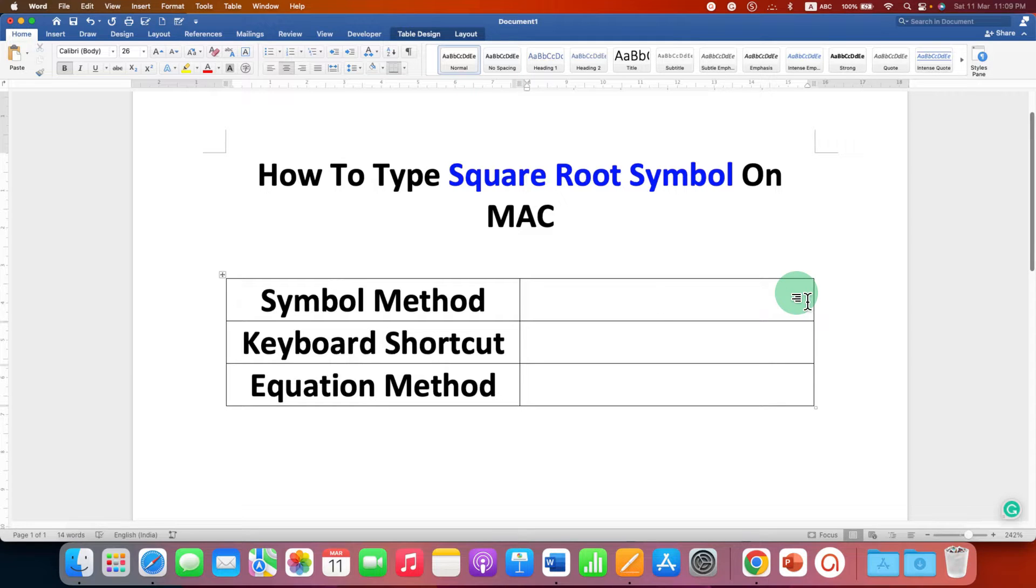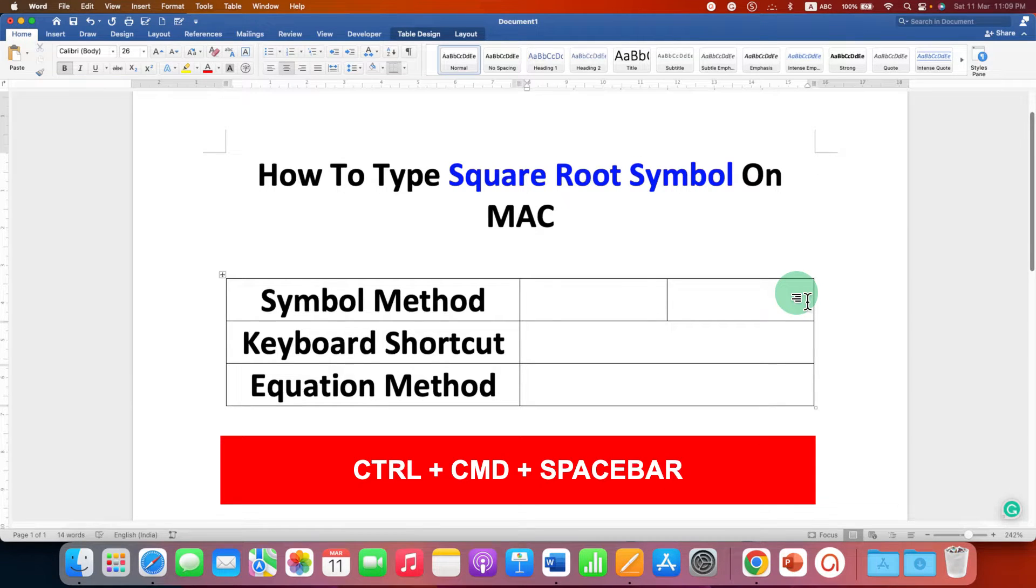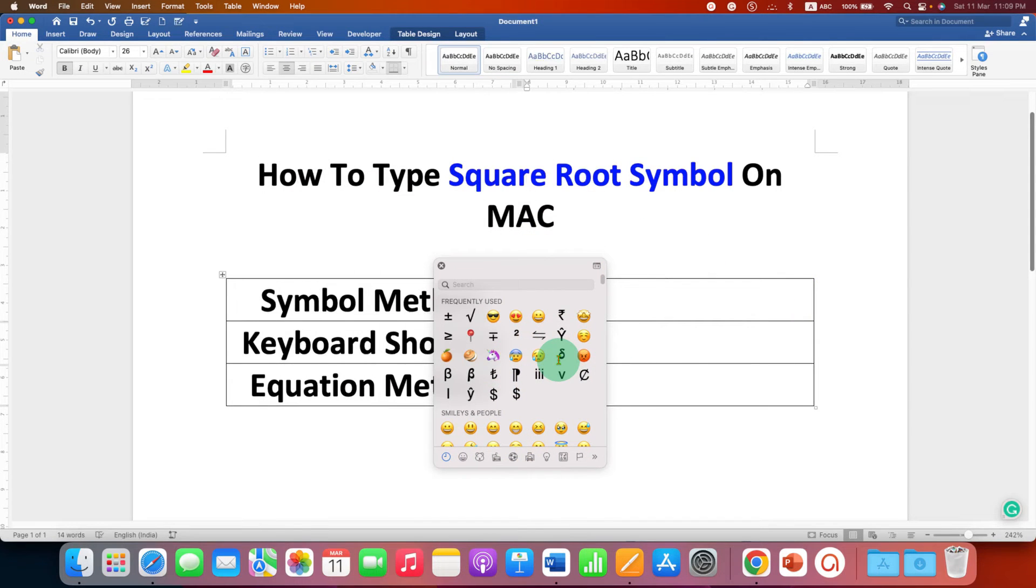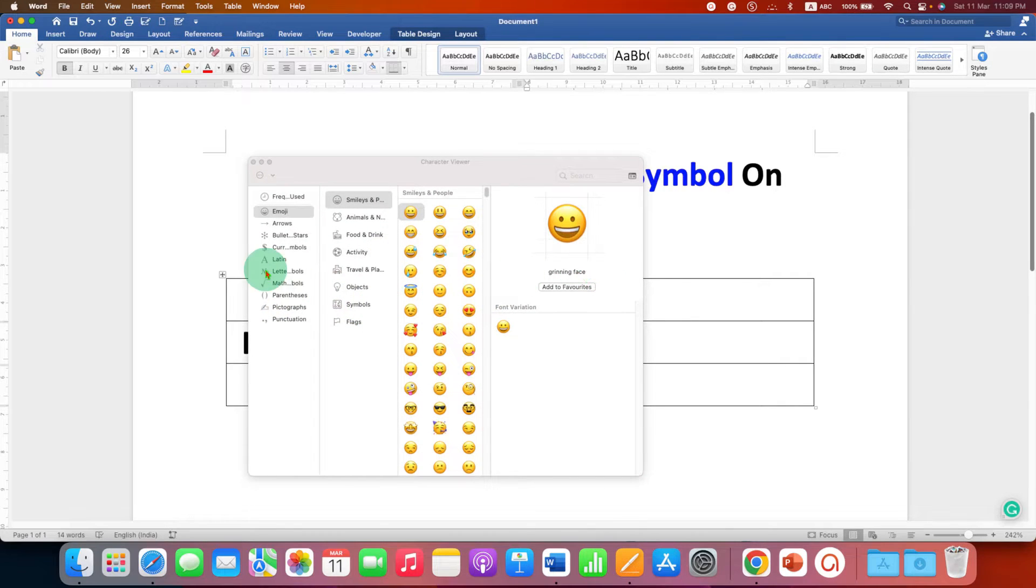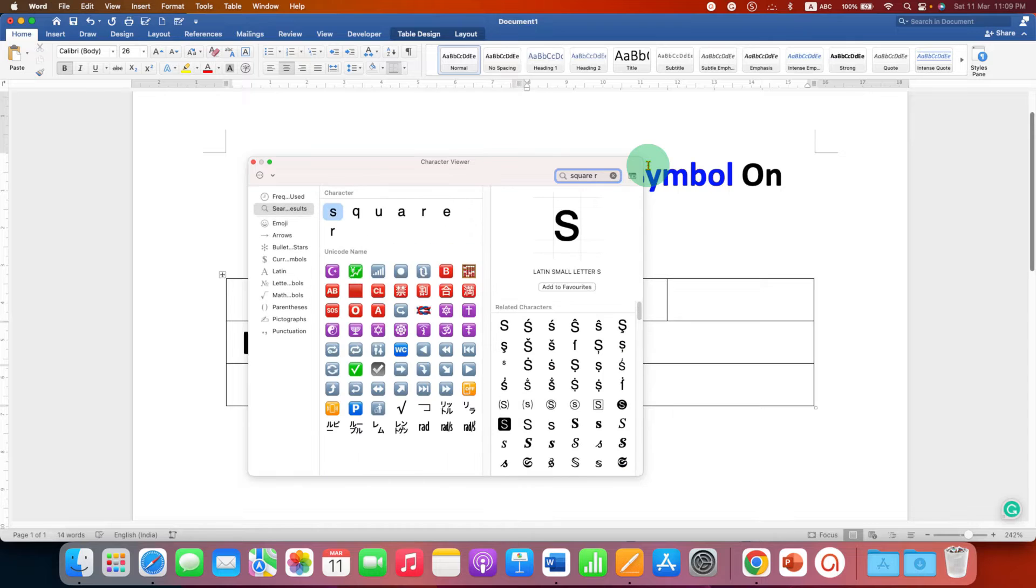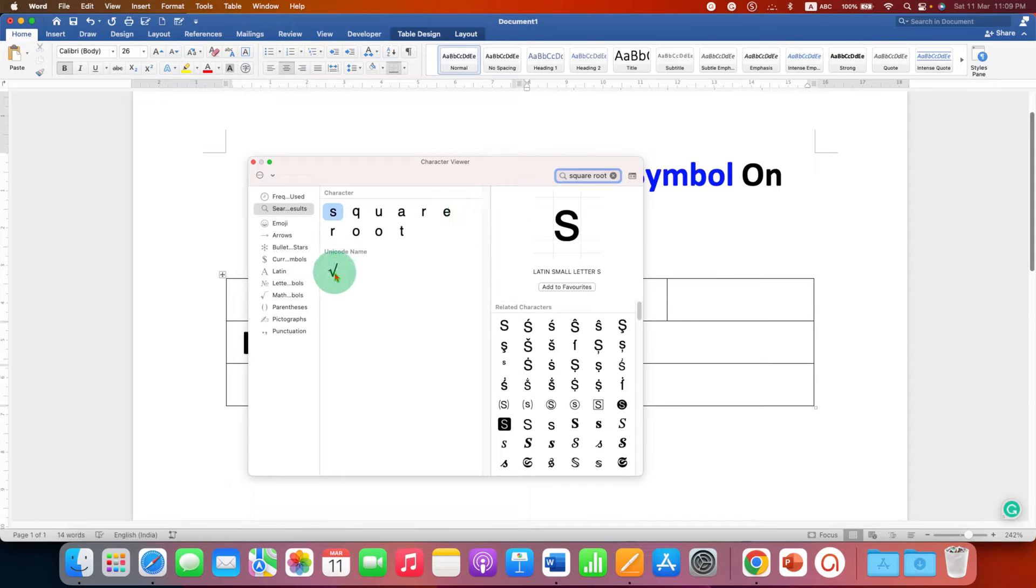On your Mac keyboard, press Control Command Space bar and you will see this small window. Click on the icon to expand this window. Under the math section, you can find the symbol, but if you don't want to search, just type 'square root' and you will see this symbol.